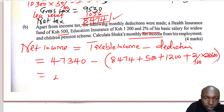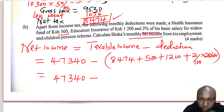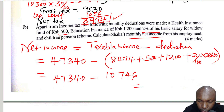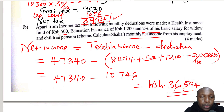So: 47,340 subtract the deductions of 8,474 plus 500 plus 1,200 plus 2% of 28,600. All the deductions total to 10,746. When you subtract that, the net income — the net salary — is 36,594. And that is basically how you are supposed to solve that question. Thank you.